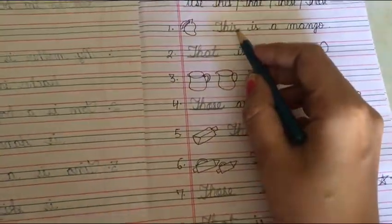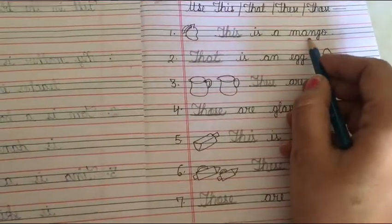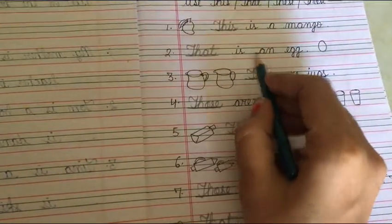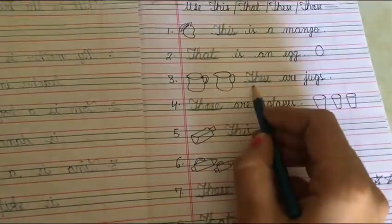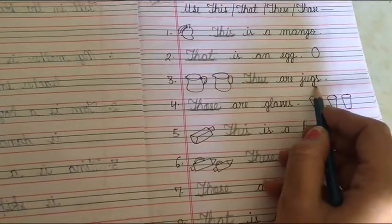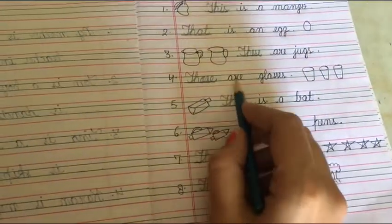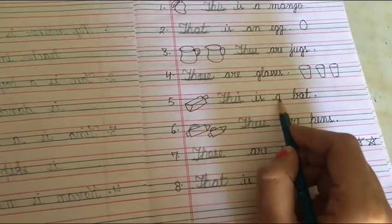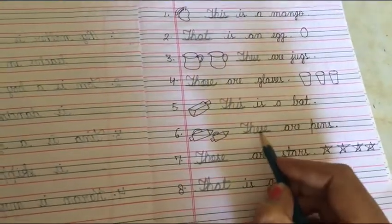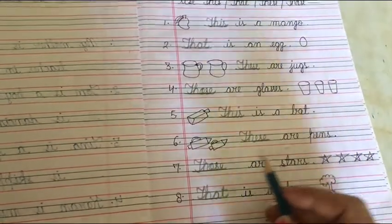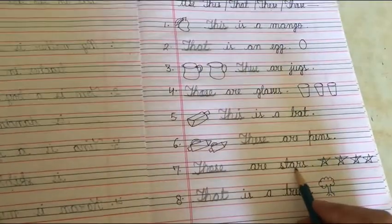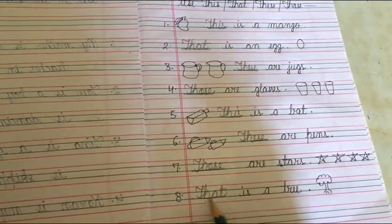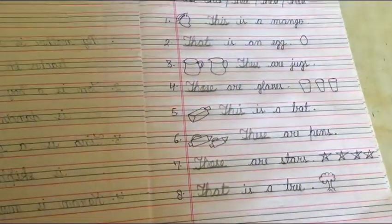Let's see again. This is a mango. That is an egg. These are jugs. Those are glasses. This is a bat. These are pens. Those are stars. That is a tree.